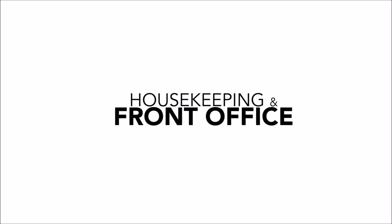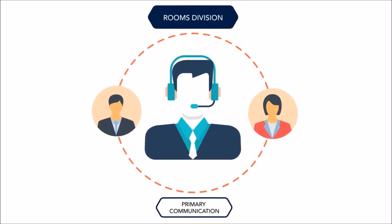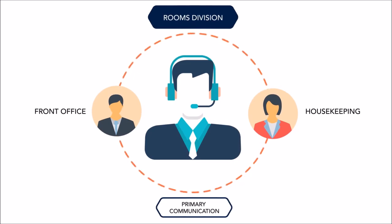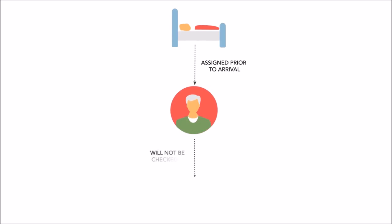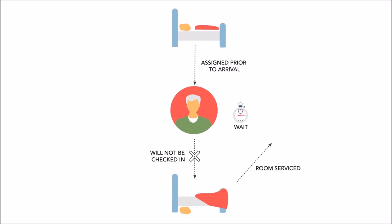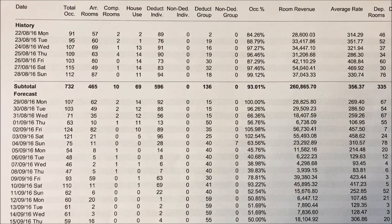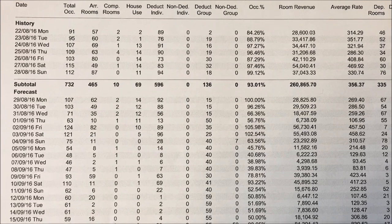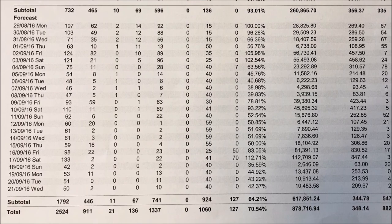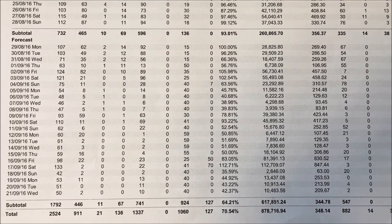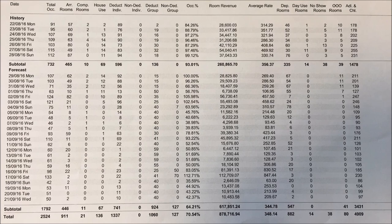Within the rooms division, housekeeping's primary communications are with front office — specifically the front desk, where rooms are assigned to arriving guests. Rooms are assigned to guests prior to their arrival, but guests may not be checked into a dirty room. This may result in either the guest waiting until the room has been serviced, or the room assignment being changed. Each night, the front desk will produce an occupancy report which lists all the rooms that are occupied through the evening, allowing housekeeping to plan their cleaning activities for the next day.